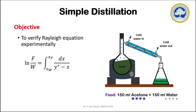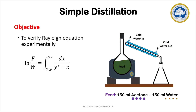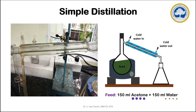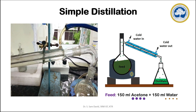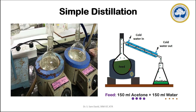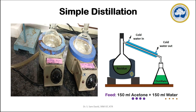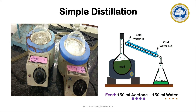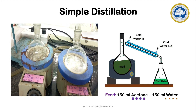In this experiment, the feed mixture is prepared by mixing 150 ml of acetone and 150 ml of water. This feed solution is loaded into a round bottom flask and the heating mantle will be switched on. When the heating mantle is switched on, the vapors start generating. A condenser with the cold water inlet and outlet is fixed with the outlet of the round bottom flask. Once the generated vapors go through this condenser tube, it will lose its energy, exchanging heat with the cold water in the shell side of the condenser, and it will become liquid. These liquid droplets will be collected in a separate conical flask.